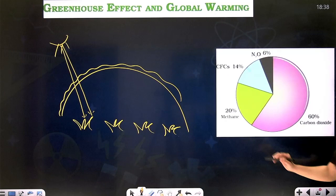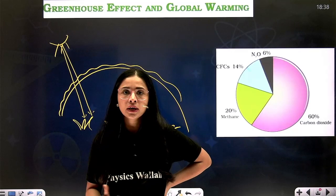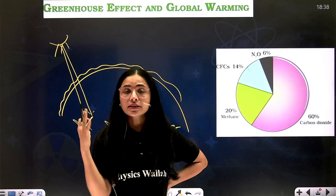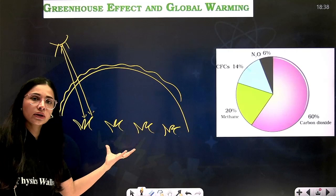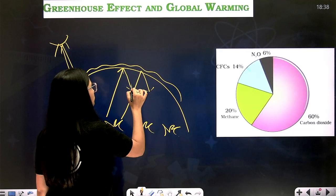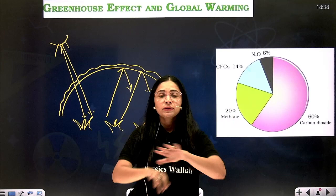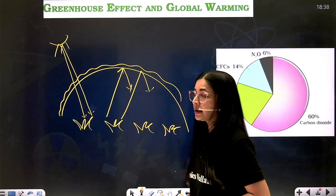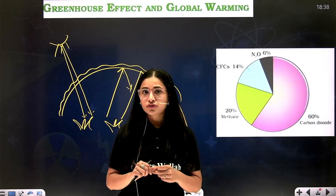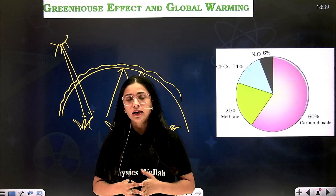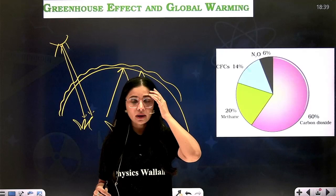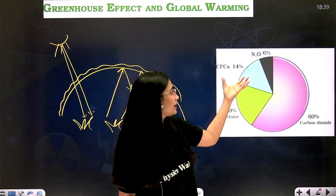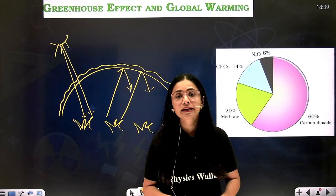Maintaining a constant temperature on earth requires this greenhouse effect — it is absolutely necessary. A greenhouse is basically a glass house where you keep a plant; sun rays penetrate in, but whatever radiations are generated by the plant, rich in gases like CO2 and methane, are not able to escape and are re-radiated back, maintaining the temperature of the earth.